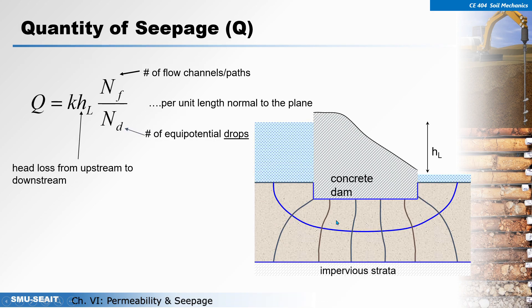The use of the flow net is to estimate the quantity of seepage. To determine seepage quantity, we use the formula: q = k · hl · (Nf / Nd), where q is seepage, k is the coefficient of permeability of the soil, hl is the total head from upstream to downstream, and Nf is the number of flow paths or flow channels.